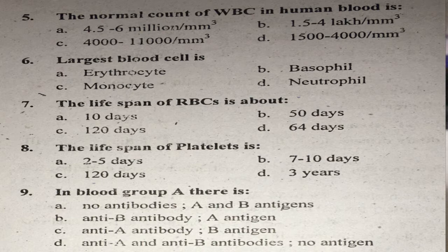Question number six: What is the largest blood cell? The largest blood cell is the monocyte. The correct answer is C — monocyte.